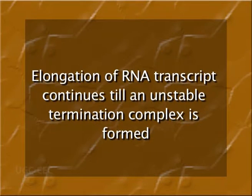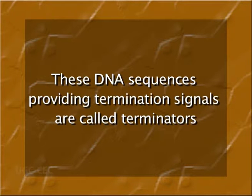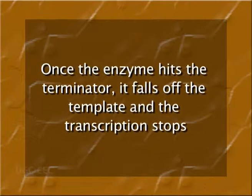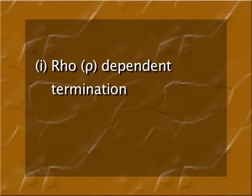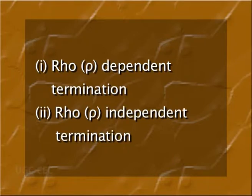Elongation of the RNA transcript continues until an unstable termination complex is formed. The termination of the mRNA chain in prokaryotes is brought about by certain termination signals on DNA. These DNA sequences providing termination signals are called terminators. Once the enzyme hits the terminator, it falls off the template and transcription stops. Termination signals found on DNA can be of two types: Rho-dependent termination and Rho-independent termination.